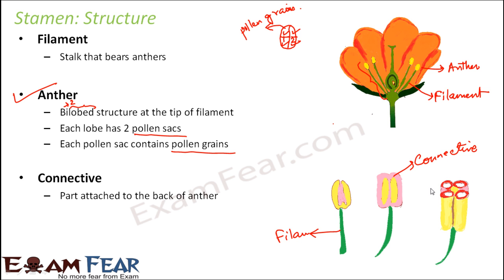When you look at the cross section of this anther, it has four sacs — one, two, three, four — and each of these sacs contains pollen grains. Pollen grains are what we are interested in because pollen grains are the male gametes. The pollen grains will fuse with the female gametes to produce the new plant. So that is the structure of a stamen: it has a filament, anther, and connective.